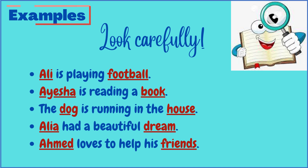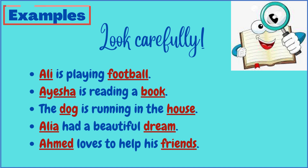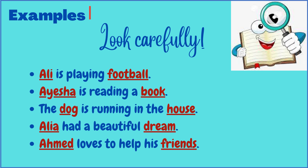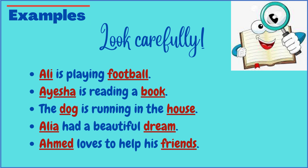The next one is 'The dog is running in the house.' Again two nouns can be spotted: dog, which is an animal, and house, which refers to a place. The next sentence is 'Alia had a beautiful dream.' In this sentence there are two nouns: Alia, a person, and dream, which refers to an idea. The next example is 'Ahmed loves to help his friends.' Here too there are two nouns: Ahmed, a person, and friends, who also refer to persons.